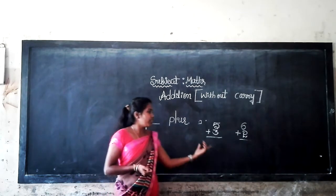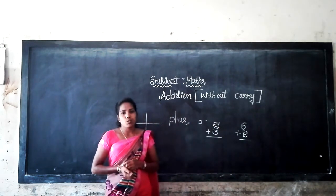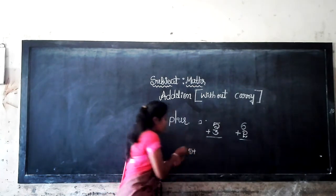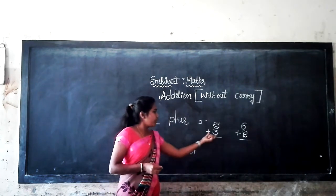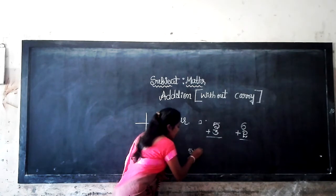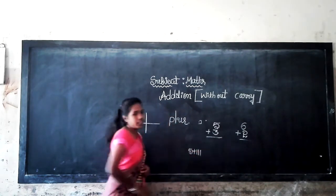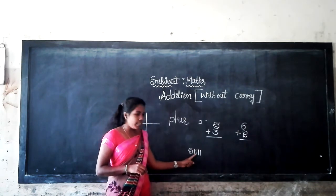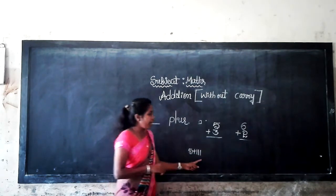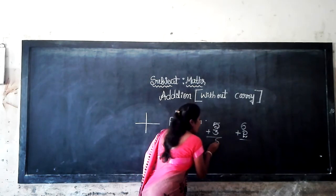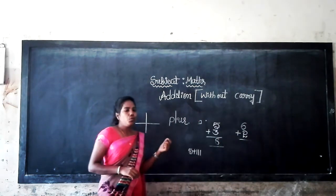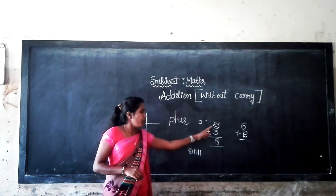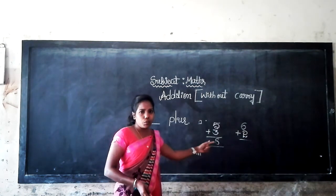You just add 3 to the 5. So after 5, count up: 1, 2, 3. Now let's count from 5 — 5, 6, 7, 8. What is your sum? 8. So 5 plus 3 is equal to 8.